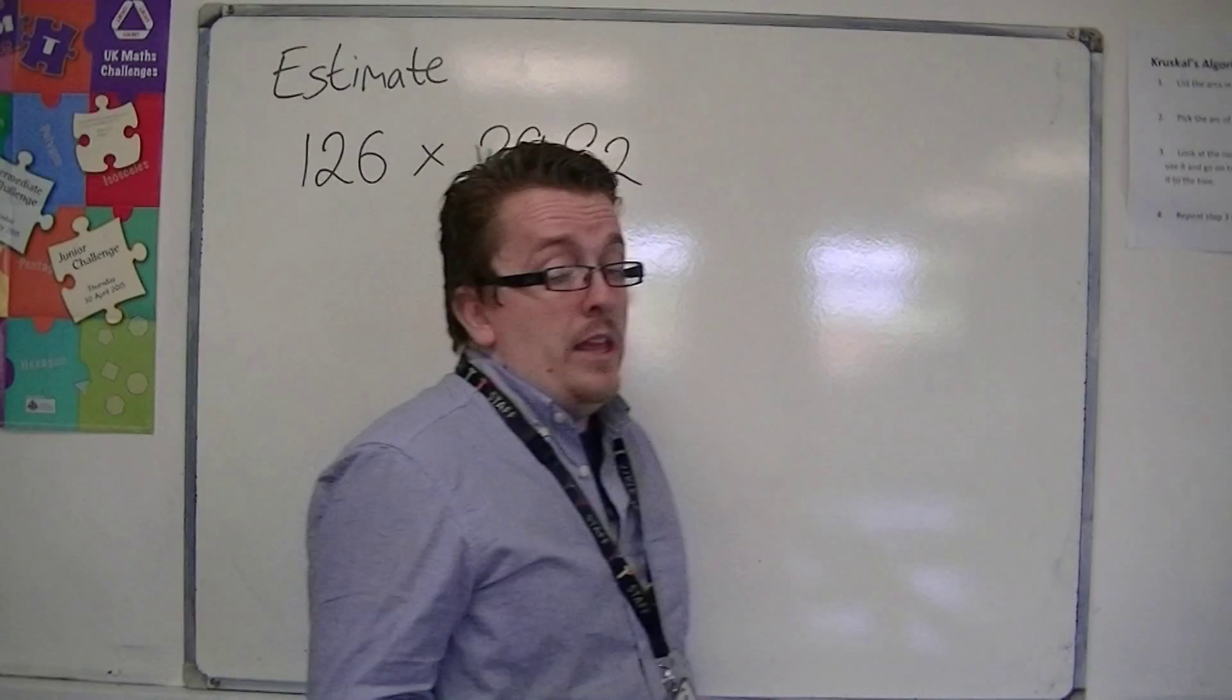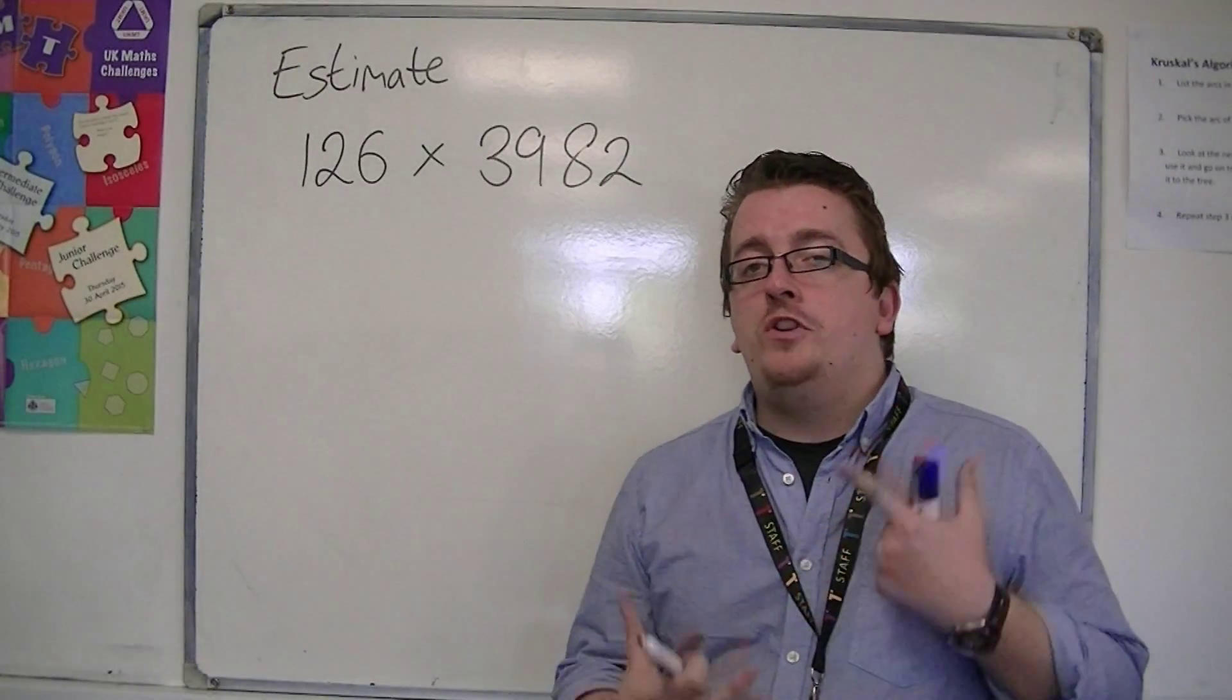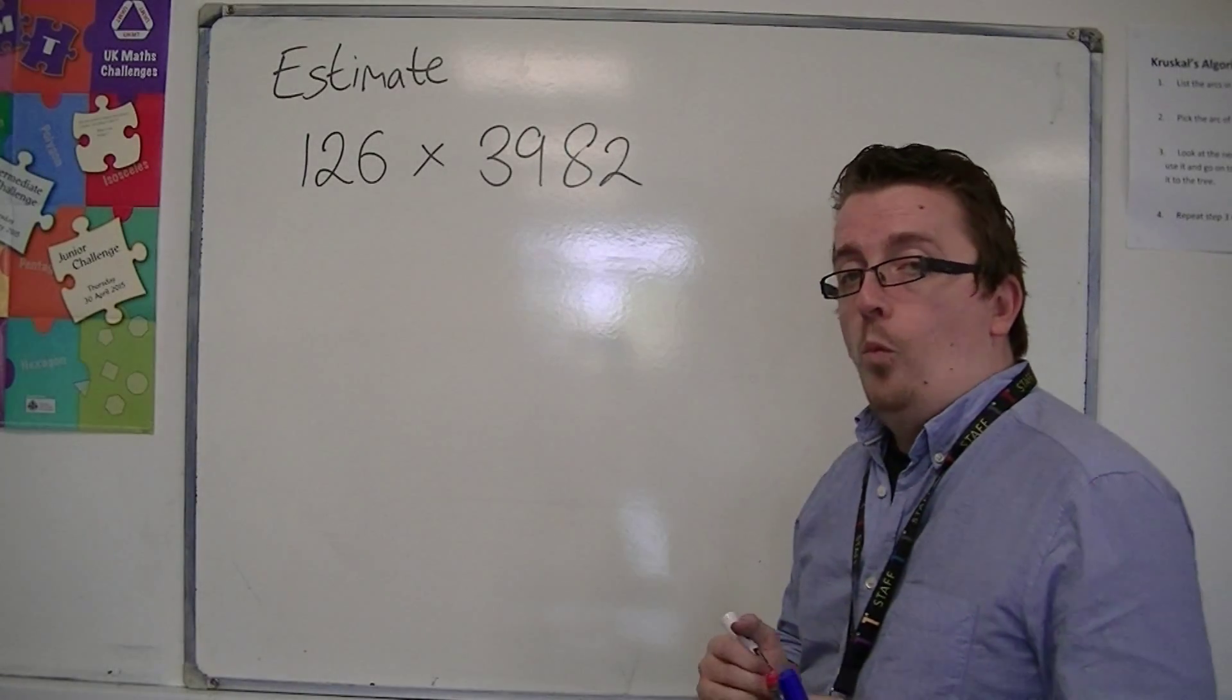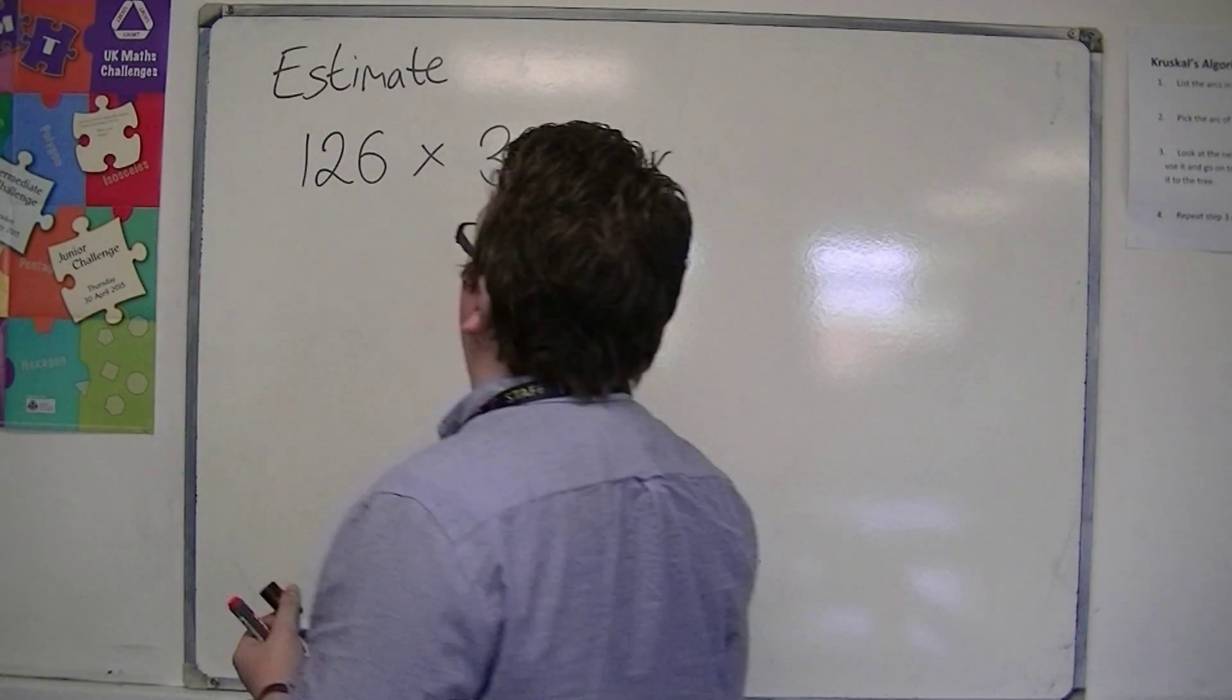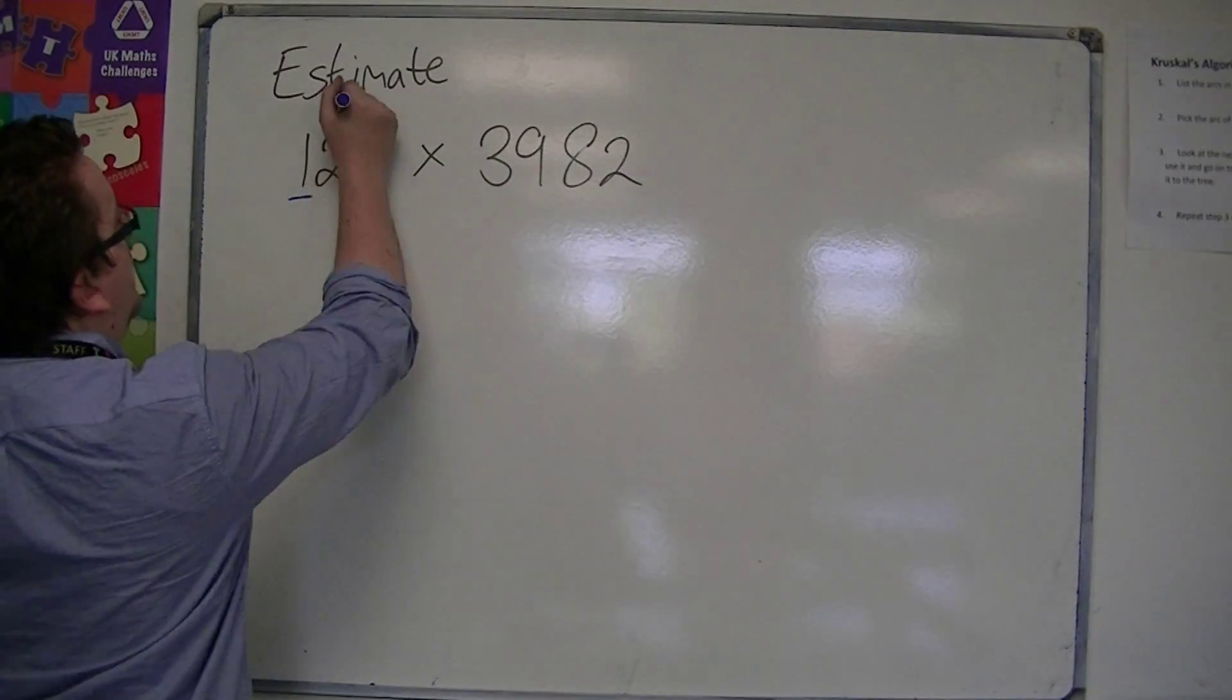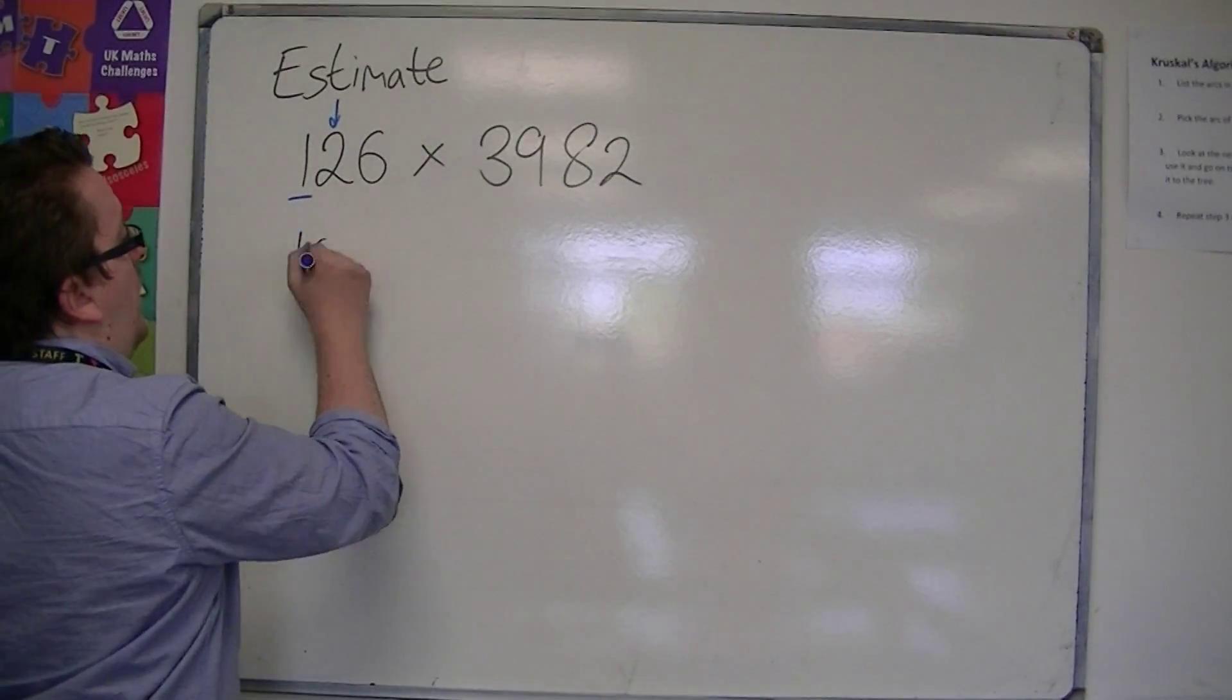So if I was asked to estimate it, what you need to do is look at each of the numbers in the calculation and round each one to one significant figure. So 126 to one significant figure, one to the right tells me to round down, so that would be 100.